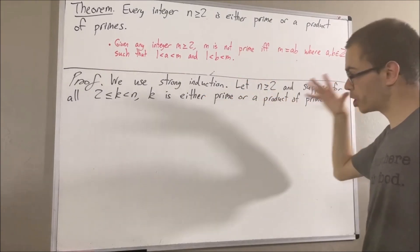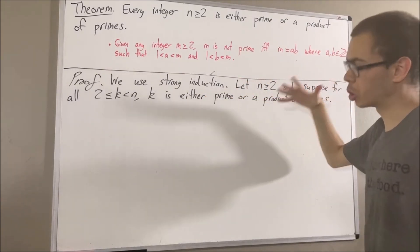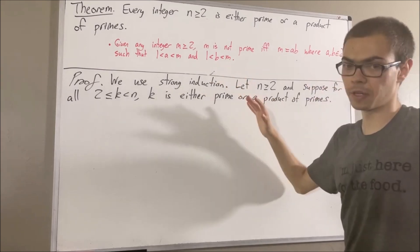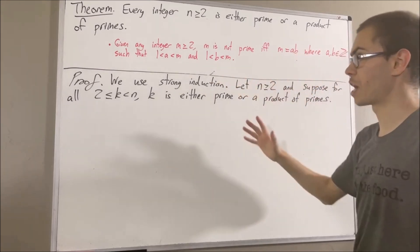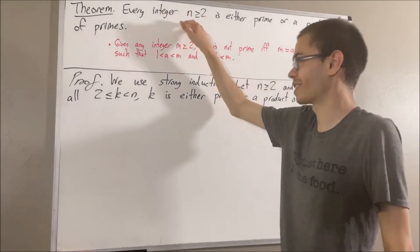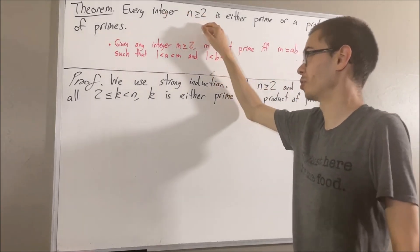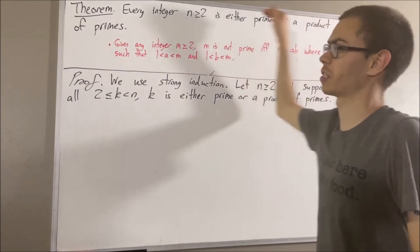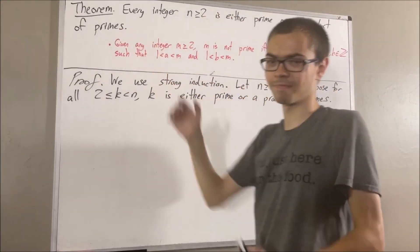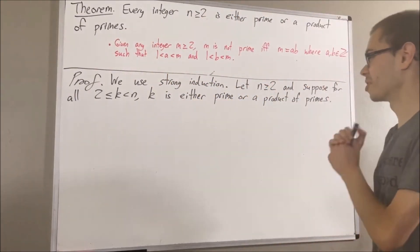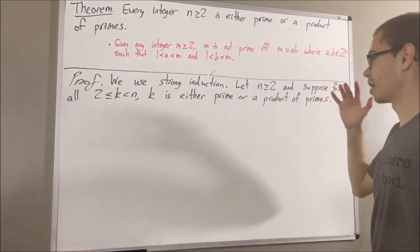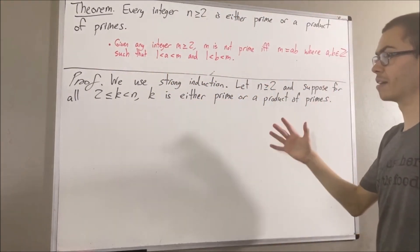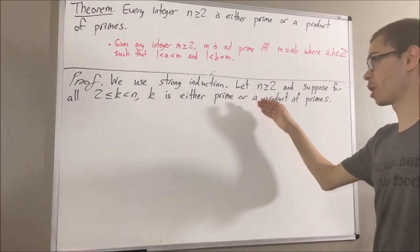The whole goal now is to show that n is also either prime or a product of primes. If we can show that, that will close the induction, and we will have shown that for all integers n greater than or equal to 2, n is either prime or a product of primes. So, how are we going to show n is either prime or a product of primes?